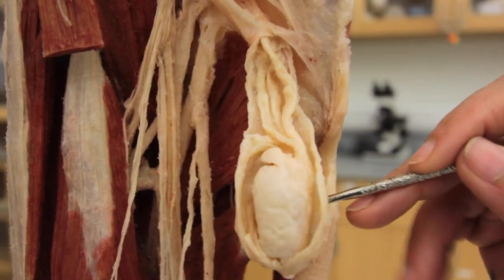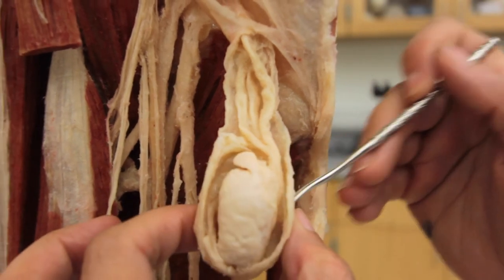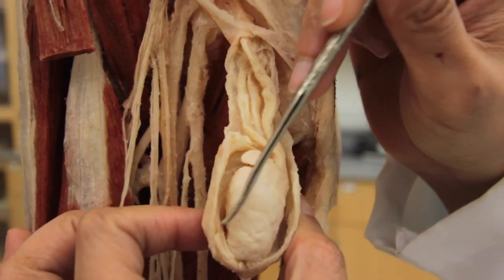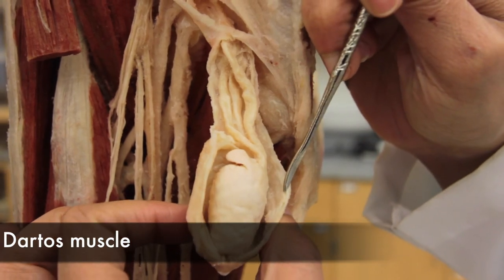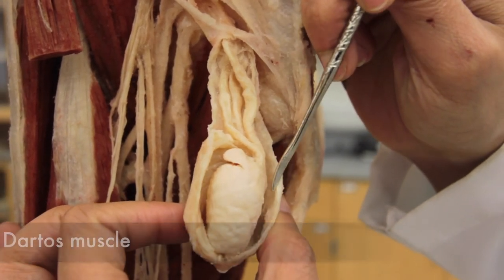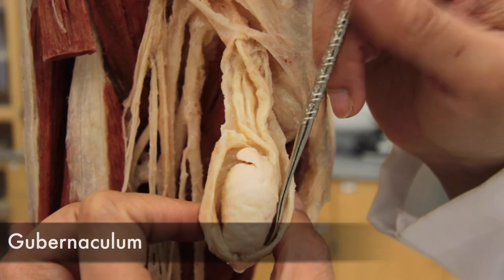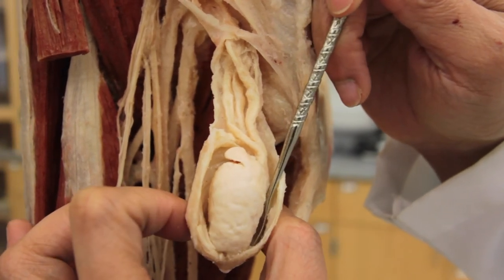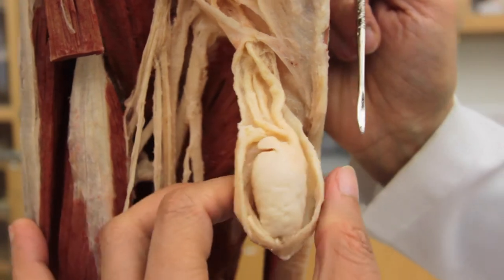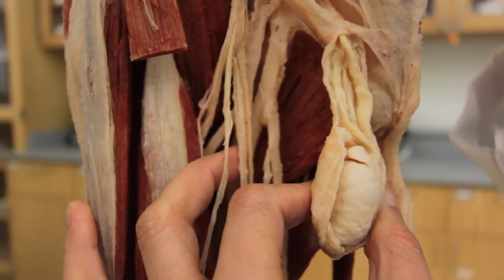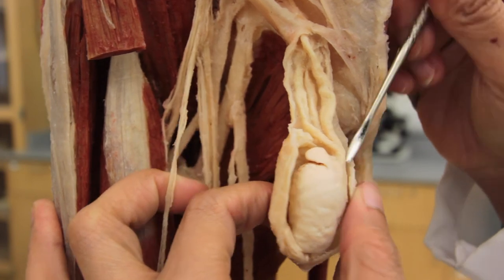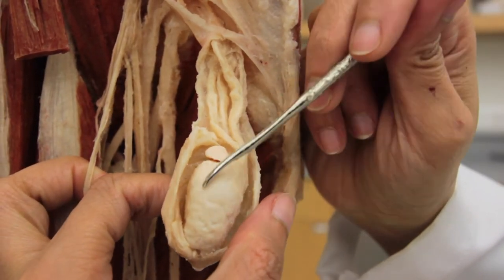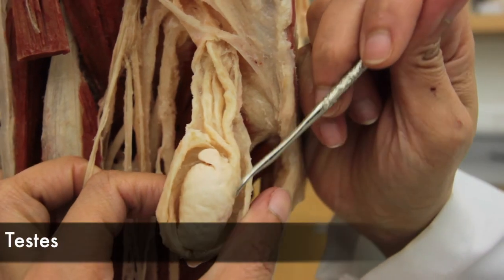So here in front of us is the scrotal sac. This is the scrotal skin, which is having the dartos muscle. And at the base of the scrotum was our gubernaculum. The distal end of the gubernaculum was anchored. That brought or that pulls down the testes up to this level. This ovoid body is the testes.